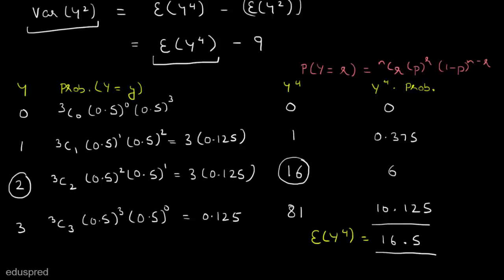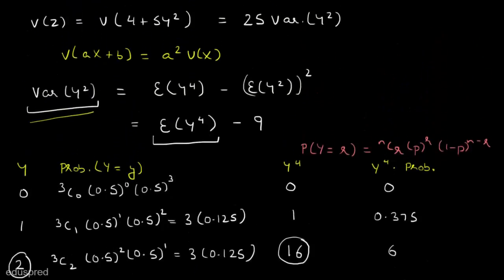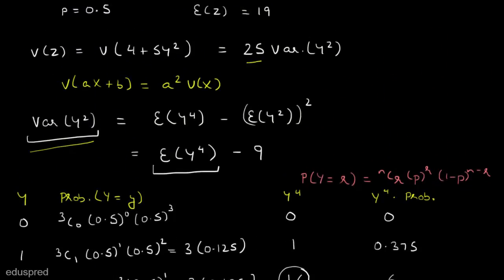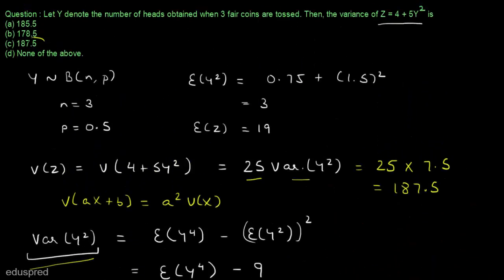Now we can find the variance of y squared: it equals 16.5 minus 9, which is 7.5. Therefore, variance of z equals 25 times the variance of y squared, so variance of z equals 25 multiplied by 7.5, which equals 187.5. That means the right answer is option C.